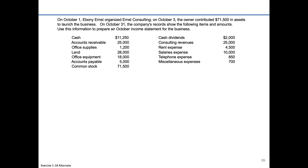At the end of October, they have cash of $11,250. They end the month with accounts receivable of $25,000 — remember, that's from sales that they made but didn't receive cash for; those sales were made on account. They have remaining office supplies of $1,200, land of $28,000, office equipment of $18,000, and accounts payable of $5,000 — amounts they owe for things purchased or expenses incurred but not yet paid in cash. They have an IOU called an account payable that'll be settled eventually.